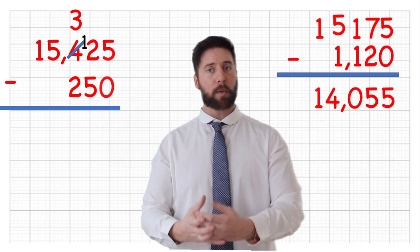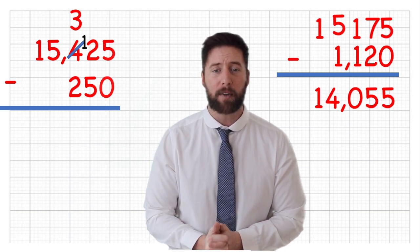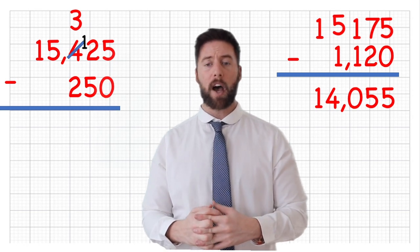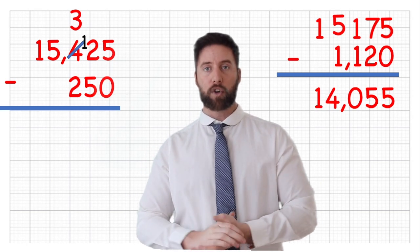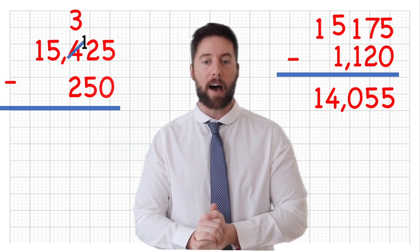If I now want to buy a wooden roller coaster at a huge £1,120, then again, same process. If we look along, £15,175 subtract £1,120 becomes £14,055.